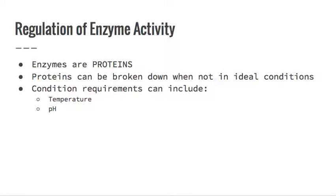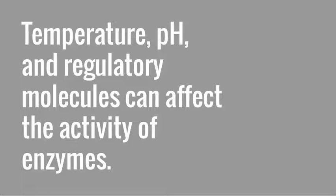When it's super hot you're probably going to be a little more sluggish. When it's super cold, your body uses a lot of energy just to keep you warm rather than running, so you might be sluggish then too. So you pick the appropriate temperature for your best performance — and enzymes are the same way. Temperature, pH, and regulatory molecules can all affect the activity of an enzyme.